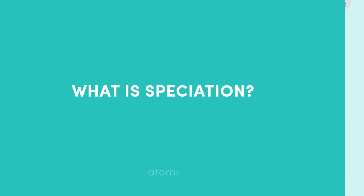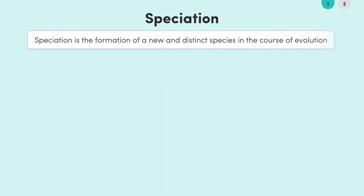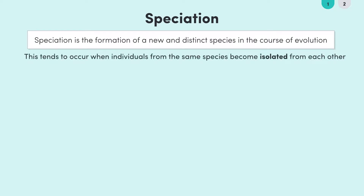Put simply, speciation is the formation of a new and distinct species in the course of evolution. But how does this happen? Well, speciation tends to begin when individuals from the same species become isolated from each other. There are lots of different ways individuals can be isolated from each other. We'll use the most common isolation method as our example.